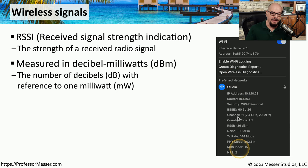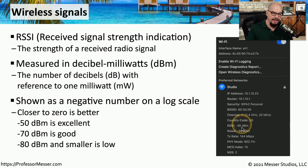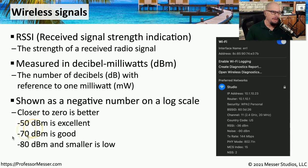For example, this is the Wi-Fi configuration on my device, and it's currently showing an RSSI of negative 36 dBm. The RSSI is shown as a negative number on a logarithmic scale, so the closer you get to zero, the better. Normally you'll see a negative value — my negative 36 fits into the negative 50 and higher range, which is an excellent value. Negative 70 dBm is good, and anything negative 80 dBm and smaller is considered a low signal.